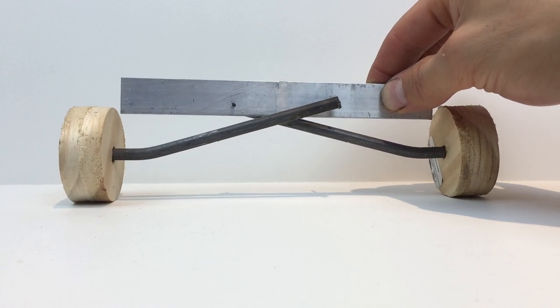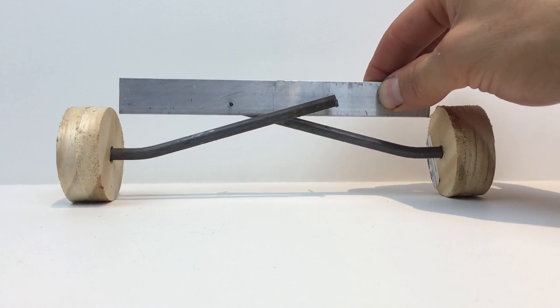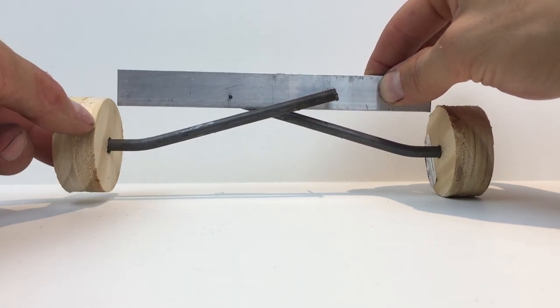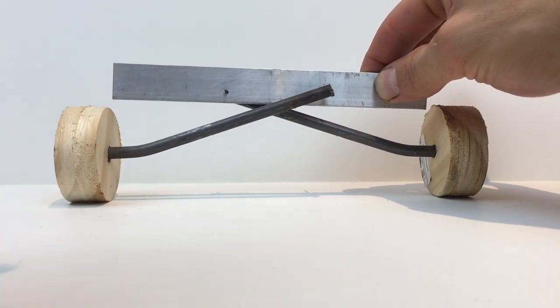So here's my model of the Ford twin I-beam or twin traction beam suspension. As you can see it is a front independent suspension so I can raise one side and it doesn't affect the other.